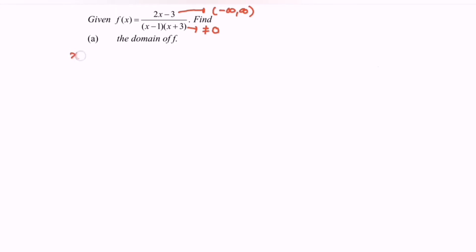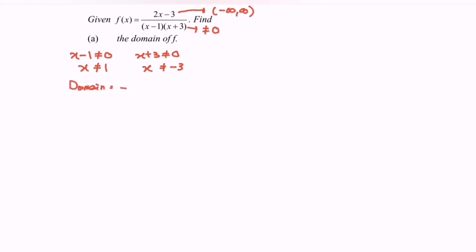So x minus 1 cannot be equal to 0, meaning x cannot equal 1. And x plus 3 cannot be equal to 0, so x cannot equal negative 3. Therefore the domain for the denominator is negative infinity to negative 3 (not included), union negative 3 to 1 (both not included), union 1 to positive infinity (1 not included).